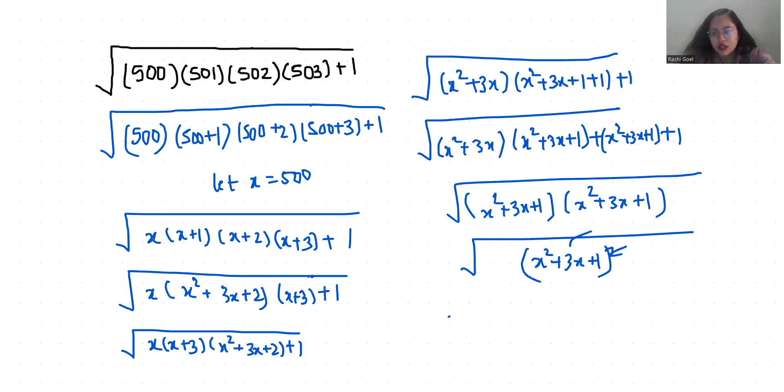Now the value of x is 500, so 500 squared plus 3 times 500 plus 1. 500 squared is 250,000 plus 1,500 plus 1, so 251,501.